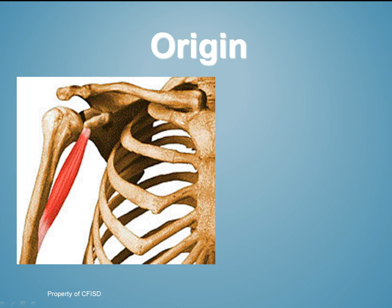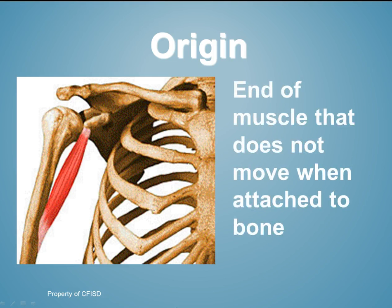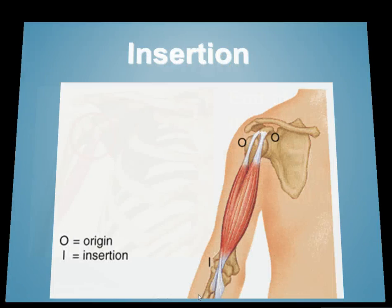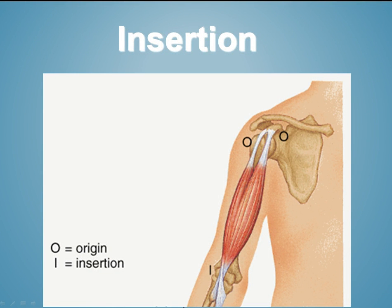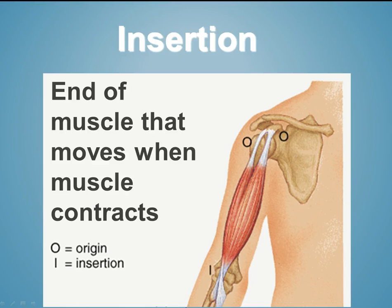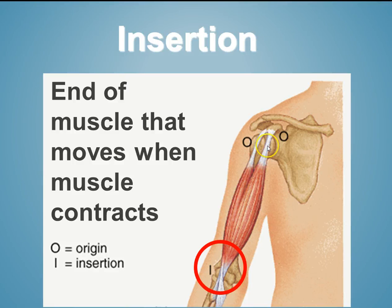Origin and insertion: origin is the end of the muscle that does not move when attached to the bone. Insertion is the end of the muscle that moves when the muscle contracts. When your biceps is contracted, the nerves stimulate the muscle and tell it to contract. The origin does not move, so when it contracts it shortens, causing your insertion to pull on whatever bone it's attached to, creating movement.